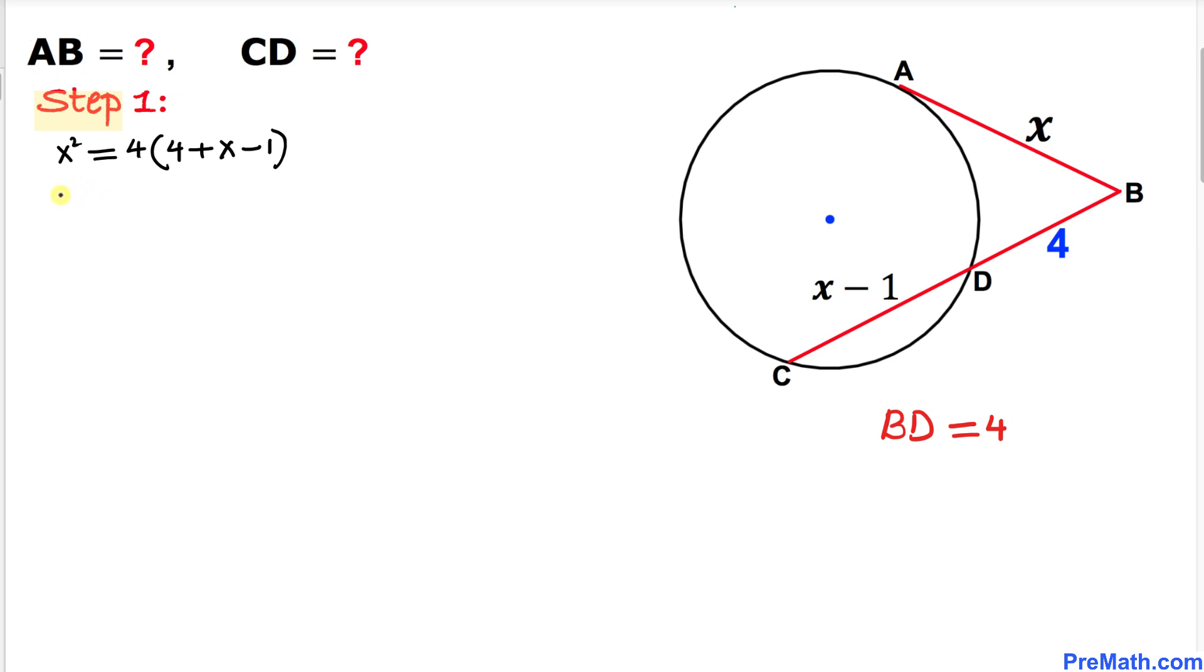So let's go ahead and simplify this thing. x squared equal to 4 times, let's combine the like terms, so that's going to give us x plus 3. Let's distribute this thing, that's going to become x squared equal to 4x plus 12. Let's move all these terms on the left-hand side, so x squared minus 4x minus 12 equal to zero.